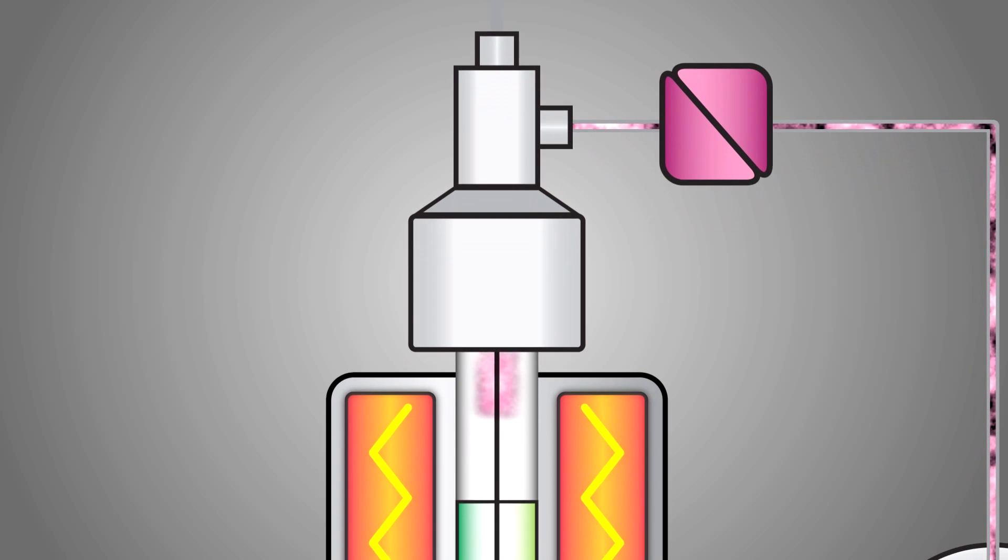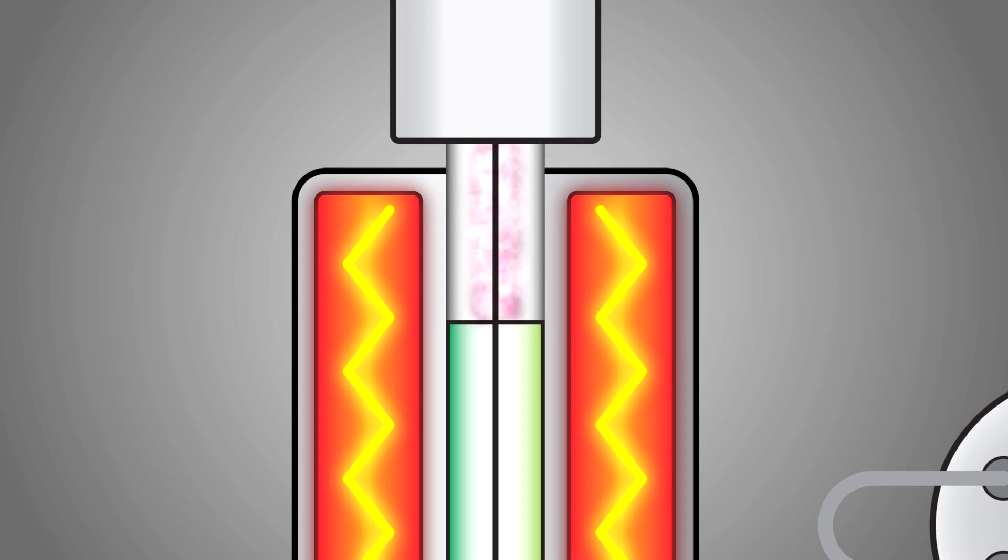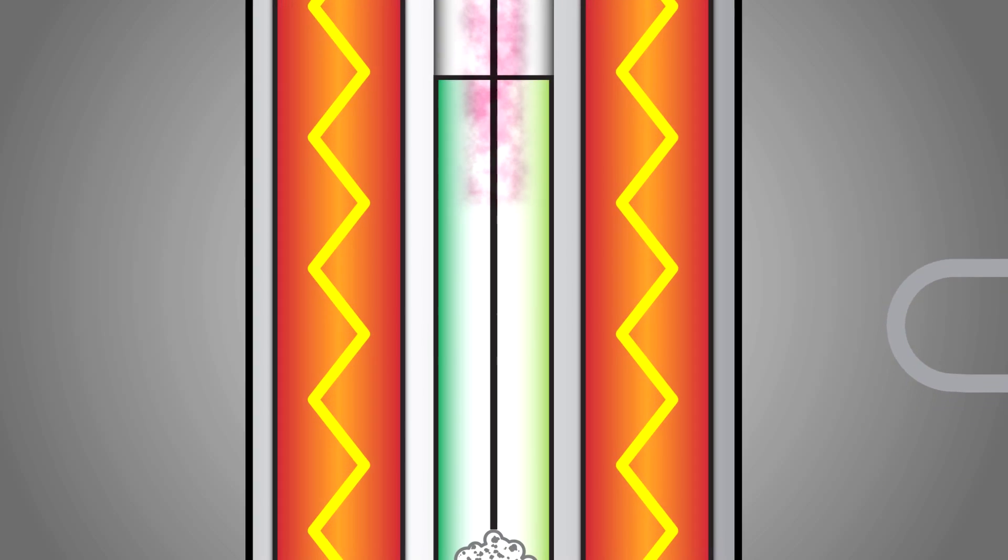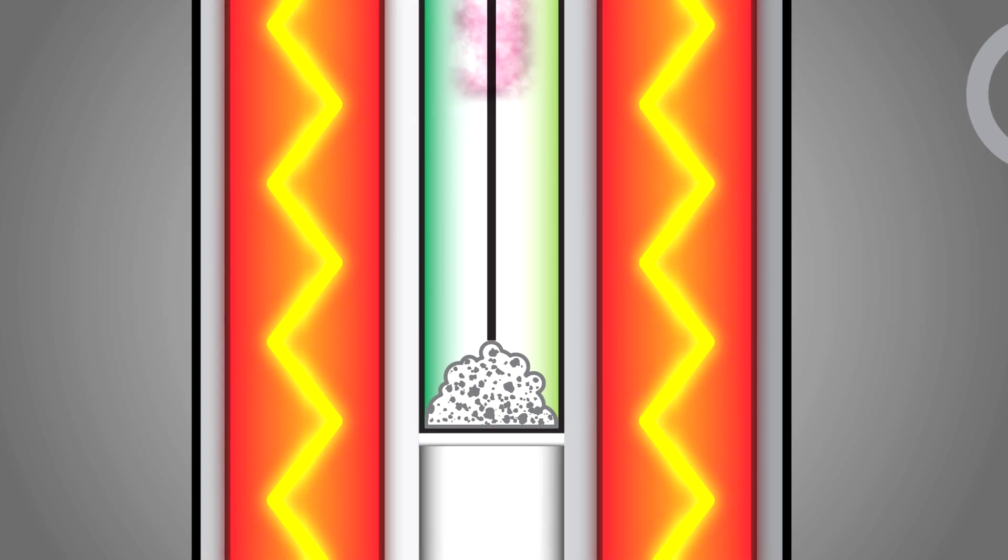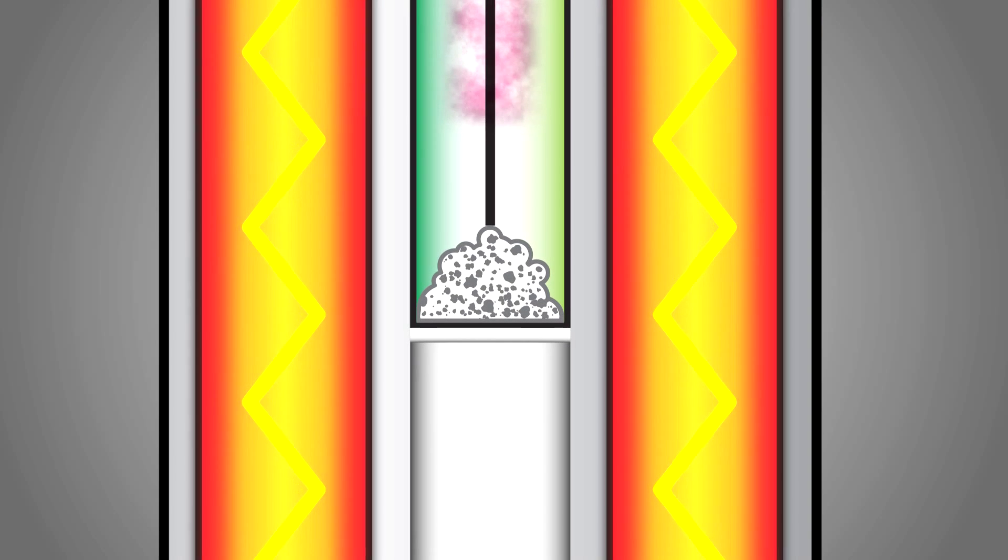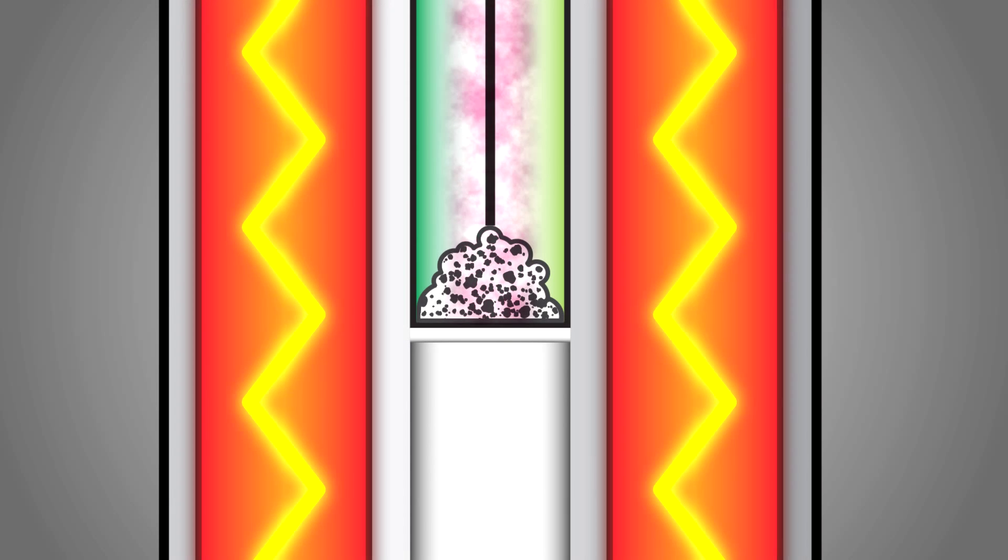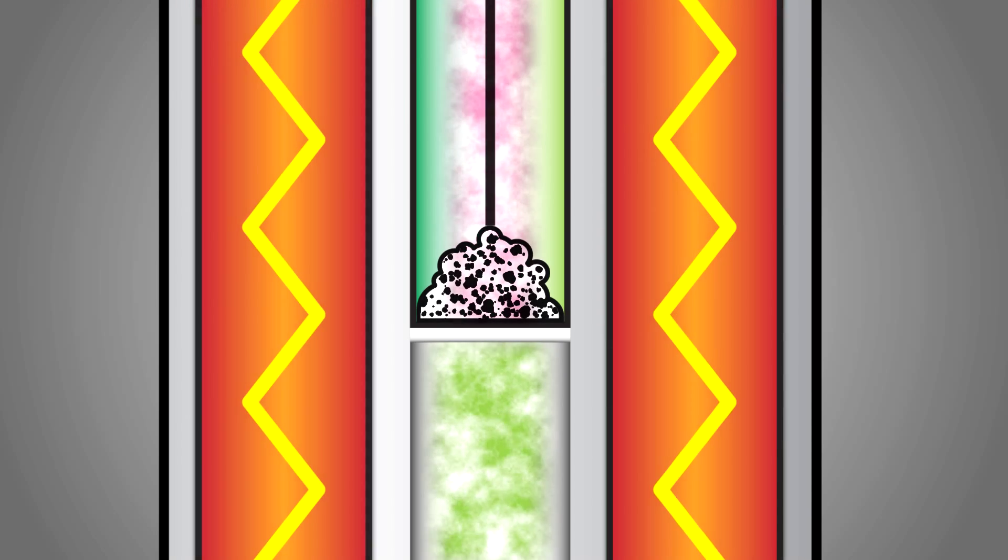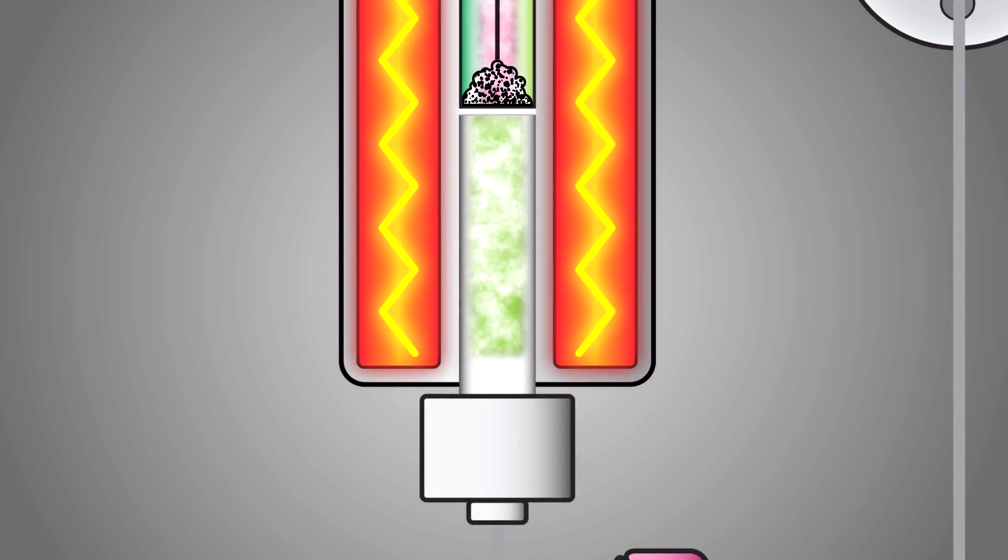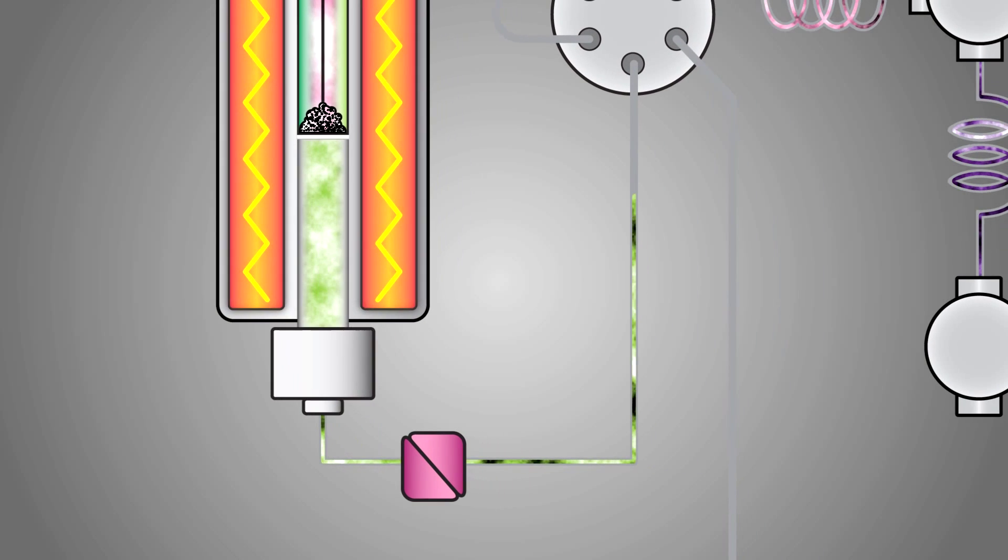The mixture then passes through the reactor, which already contains the appropriate catalyst for the reaction and is heated to a temperature of 400 to 500 degrees C. Next, the reaction takes place.